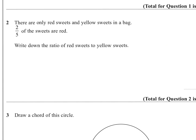Question two: there are only red sweets and yellow sweets in a bag. Two-fifths of the sweets are red, so three-fifths are yellow. You need to write down the ratio of red to yellow. In terms of fifths, red has two and yellow has three, so the answer is 2:3.